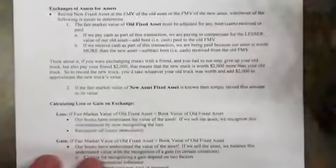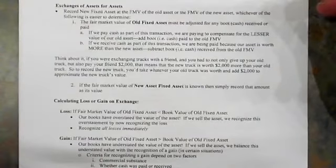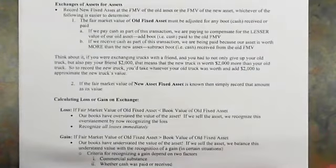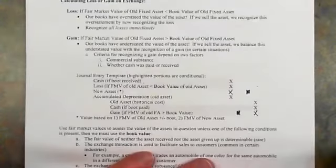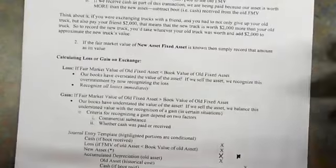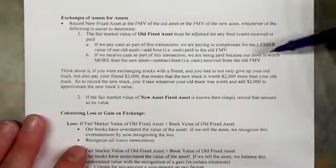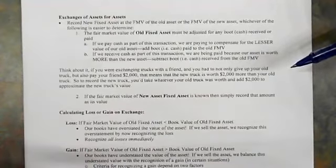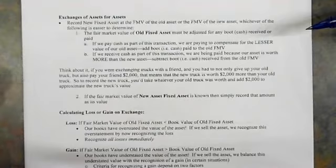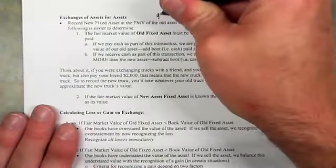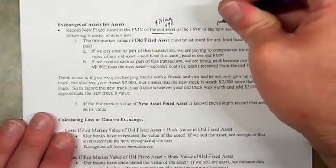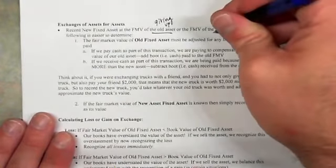Let's talk about exchanges — assets for assets — a non-monetary exchange. When we exchange one asset for another, the rule of thumb is to record the new fixed asset at the fair market value of the asset we're giving up (the old asset), or the fair market value of the new asset (the asset we're receiving), whichever is easier to determine.